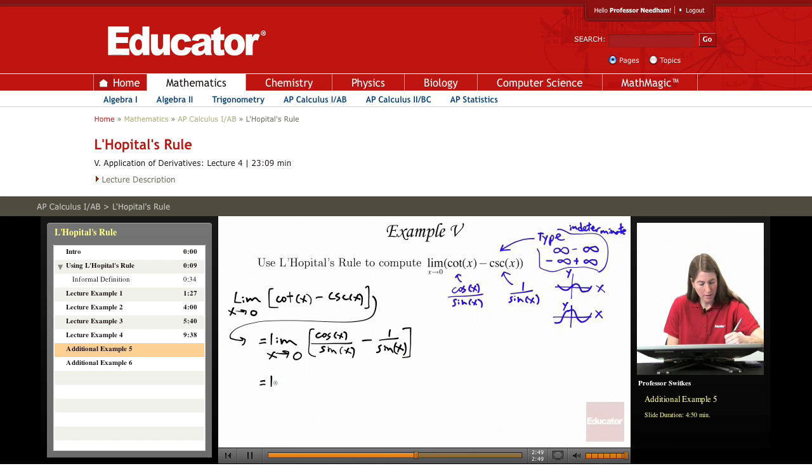We have a common denominator. Let's do the subtraction and we'll have cosine of x minus 1 over sine of x. And now let's pause and look at what sort of limit this is.